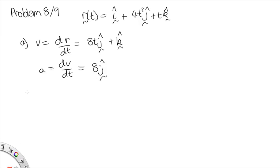Part b says, what is the shape of this particle's trajectory? Well, the 4t squared here tells us that that's going to be a parabola. So the answer to this is a parabola.